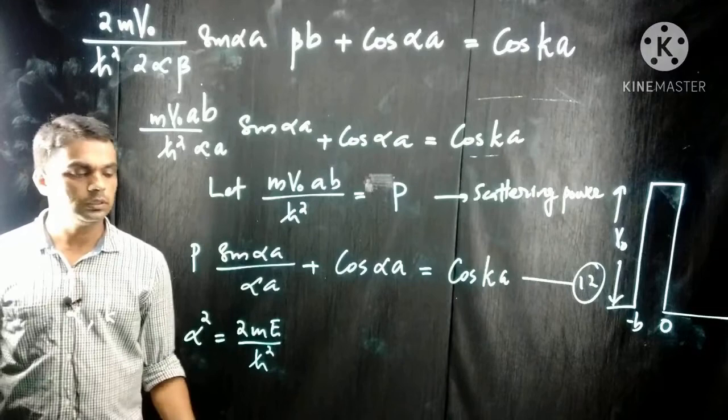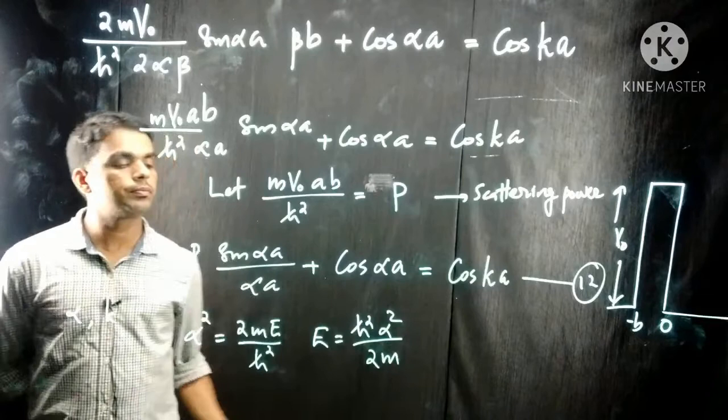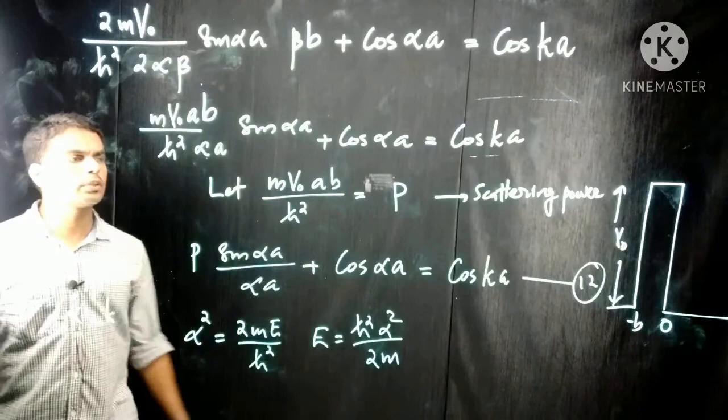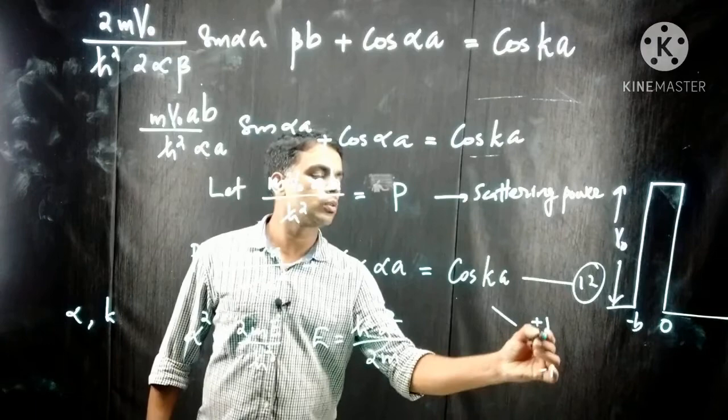Here α is related to energy: α² = 2mE/ℏ², or equivalently E = ℏ²α²/2m. The right-hand side of equation 12, the cos(ka) term, can only have values between +1 and −1.